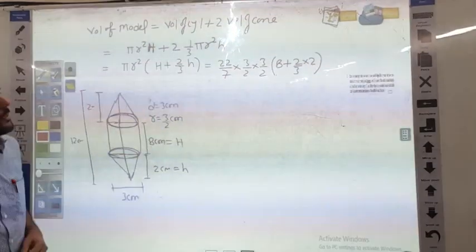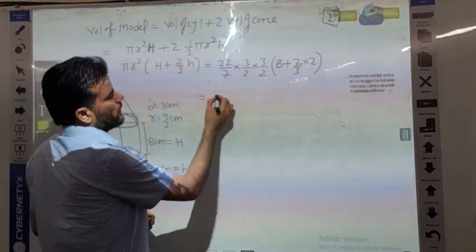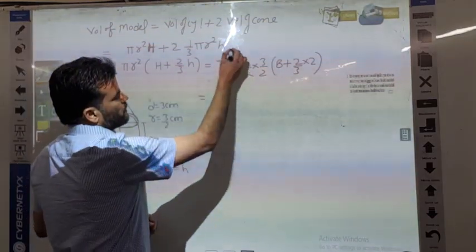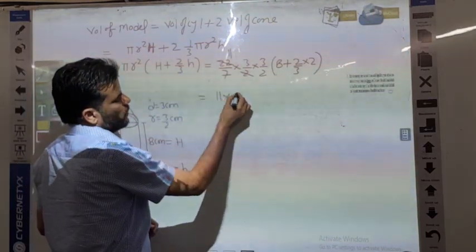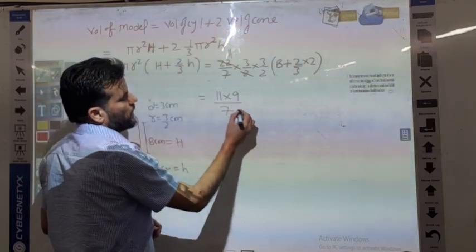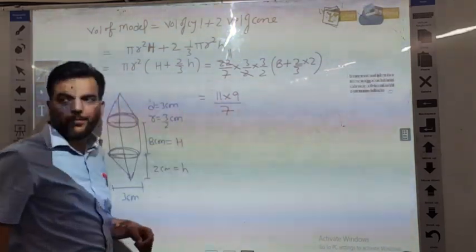This is the small h. 11 into 9, 5, 7, 3, 8, 24. 7, 2 is 14. 3, 8 is 24 plus 4 is 28 upon 3.